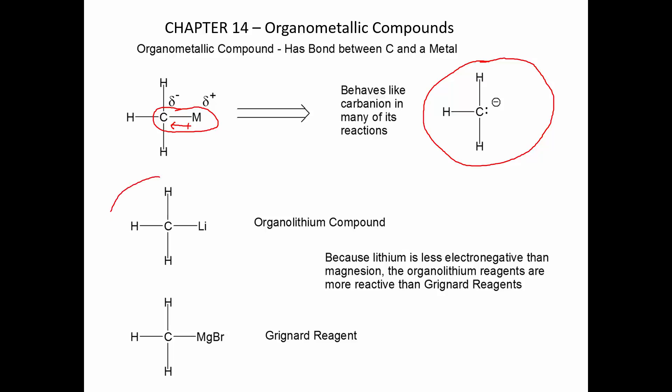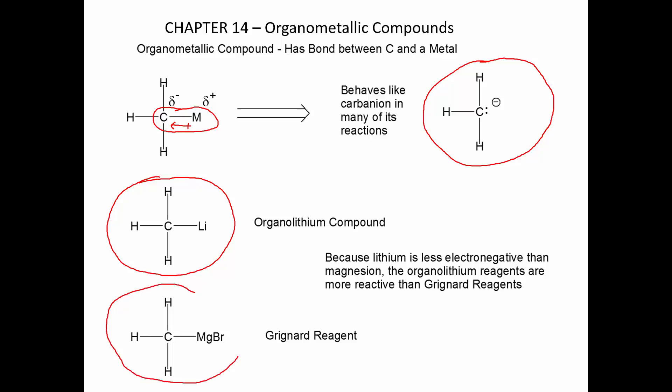An organolithium compound, exemplified here by methyllithium. And an organomagnesium compound — recognize that magnesium is in the second column of the periodic table, so we have to have a bromine here to fill the coordination sphere. The organomagnesium compound is named after its discoverer, Victor Grignard, one of the earliest winners of the Nobel Prize in Organic Chemistry. So this is just going to be referred to as the Grignard reagent.